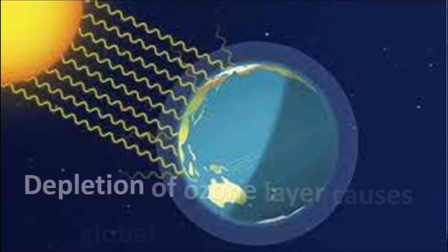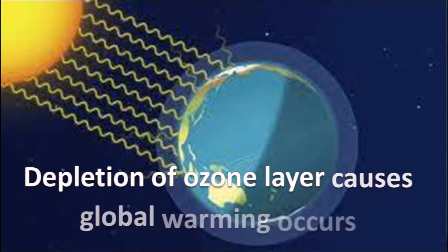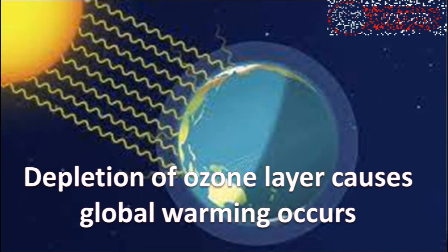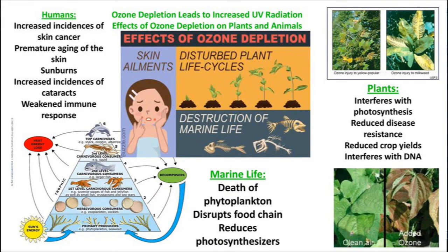The effects of depletion of the ozone layer include global warming. It also affects human health, causing various types of skin diseases and eye problems. It destroys marine life, damages plants and animals, and the whole ecosystem on the Earth's surface gets affected by depletion of the ozone layer.